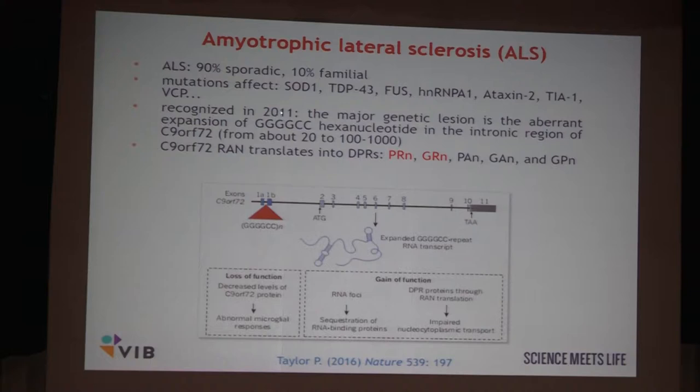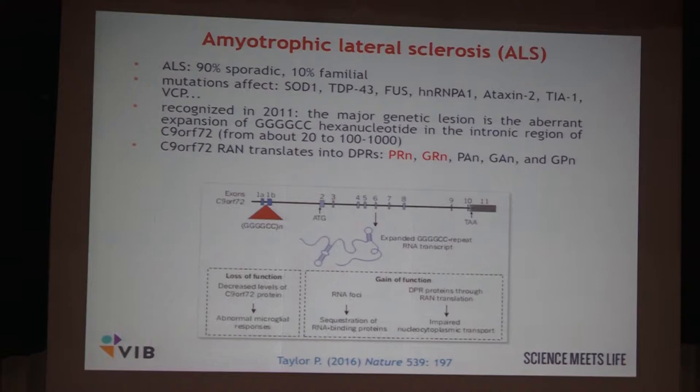More importantly, it was recognized around 2011 that there is another type of genetic lesion in ALS: the expansion of a hexanucleotide element in the intronic region of a gene of unknown function. From a normal roughly 20 repeats, it can go up to 100 or 1,000 repeats in diseased individuals, and that apparently contributes to the development of disease.